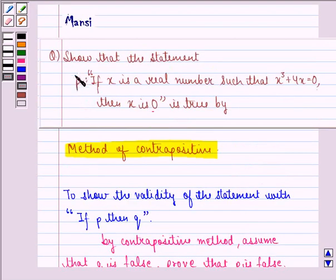Now here the statement P given to us is if X is a real number such that X³ plus 4X equals 0, then X is 0. This corresponds to two different statements.